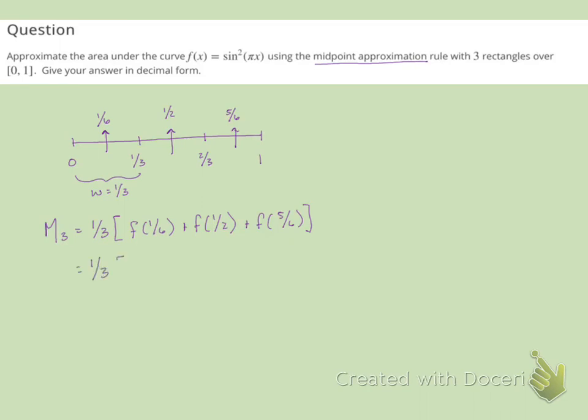And I'm going to write this as sin(π/6)² plus sin(π/2)² plus sin(5π/6)².